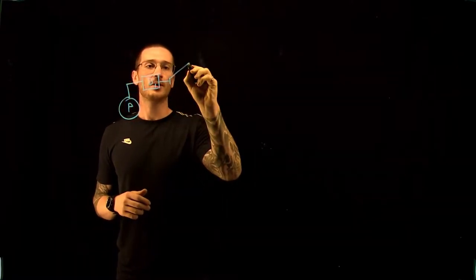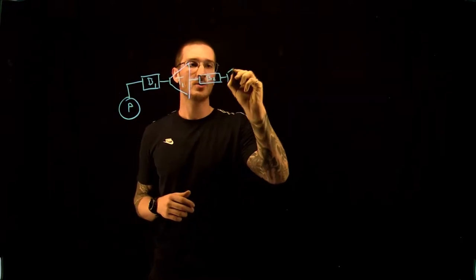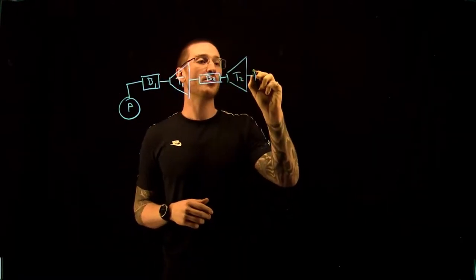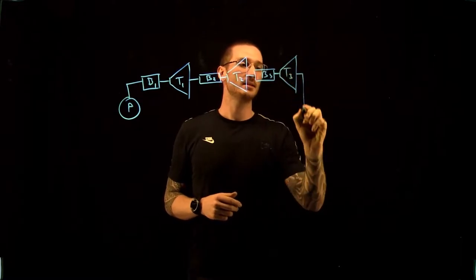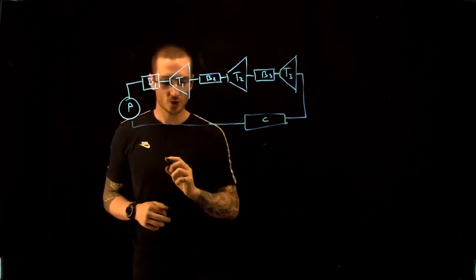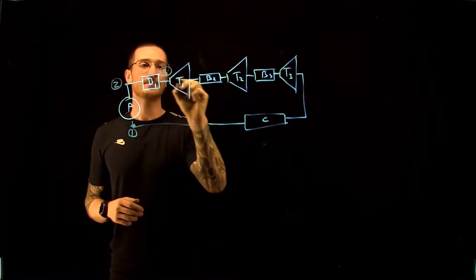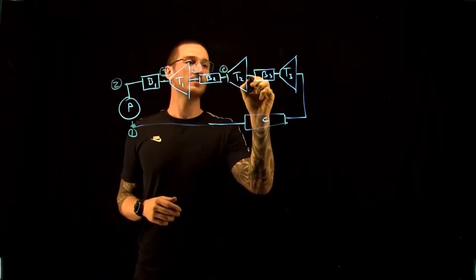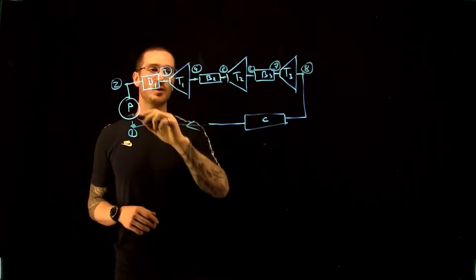Drawing this cycle out: we start with a pump, go to a first boiler, through our first turbine, through a second boiler — this is our first reheat process — then through a second turbine, a third boiler for our second reheat process, and finally through a third turbine into our condenser and back to the pump. We label the states 0.1 through 0.8, flowing in this direction.